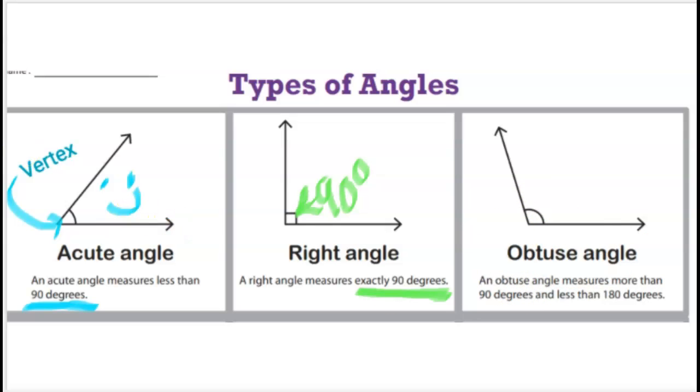So an obtuse angle, according to our definitions here, is an angle that is more than 90 degrees. I mean, it could be 0.002 more than 90 degrees. It will be an obtuse angle. So these are your three classifications. Being a right angle, very hard to do. You have to be exactly 90 degrees. Anything more than 90 degrees, you will be an obtuse angle.